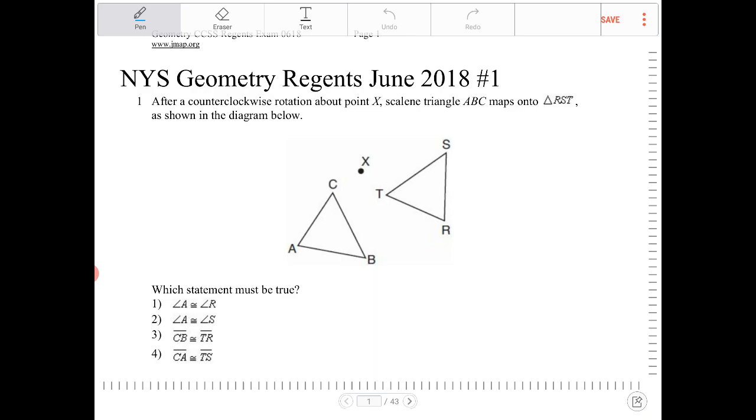So when we are rotating something, the orientation, the side lengths, and the angle measures will not change. So all the corresponding angle measures, all the corresponding side lengths, the orientation, whether the triangle or polygon is drawn in a clockwise or counterclockwise orientation, all of that remains the same.